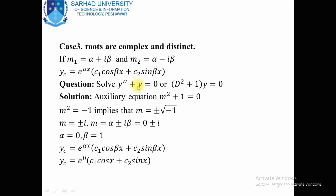Suppose we have a second order homogeneous linear differential equation y'' + y = 0. This equation can be written as (D² + 1)y = 0. Now y = 0 is the trivial solution and we have to find the non-zero solution. D² + 1 gives the auxiliary equation m² + 1 = 0. In order to find m, we obtain m² = -1, which implies m = ±√(-1).